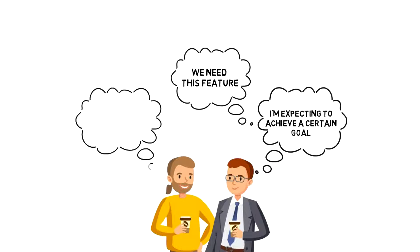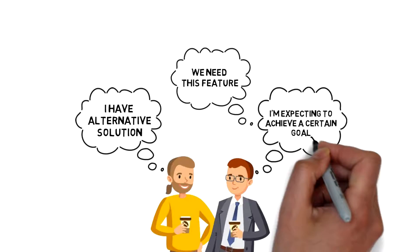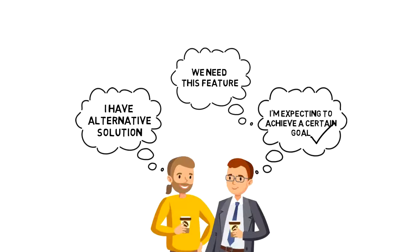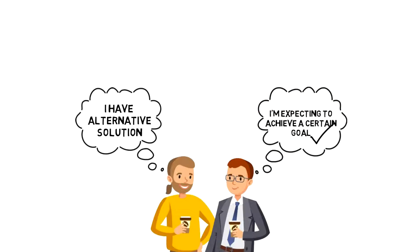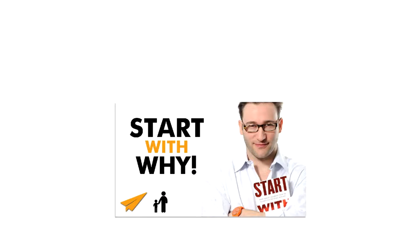After I explained my why, the developer proposed an alternative solution that would help us as a team to achieve the goal quicker. We scrapped my original idea and went with the developer's suggestion and it was the right choice. We developed the new solution quicker and it was also more functional. Today we'll take a look at the book called Start with Why by Simon Sinek. So let's dive in.